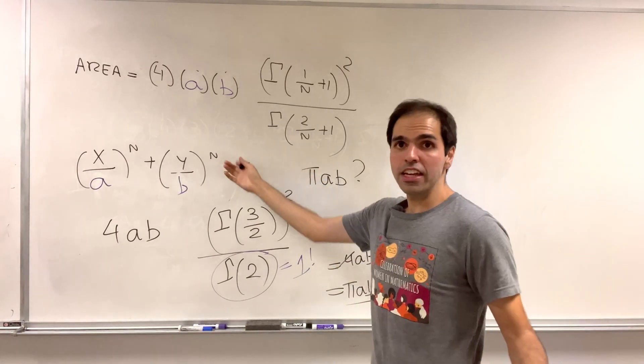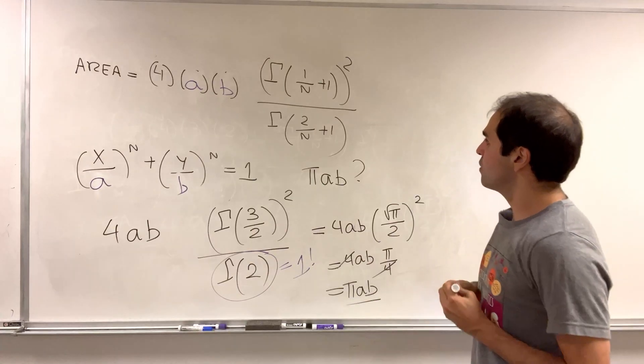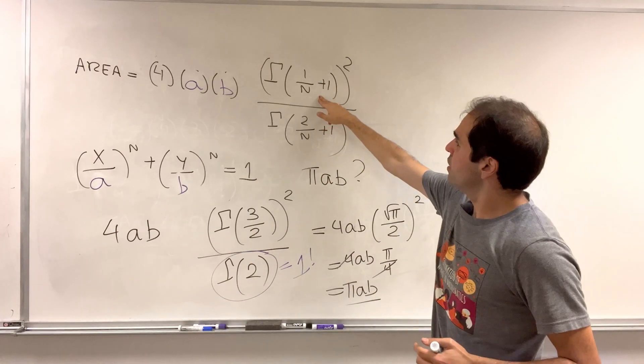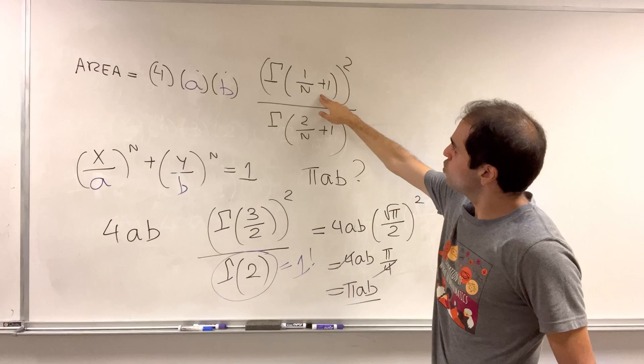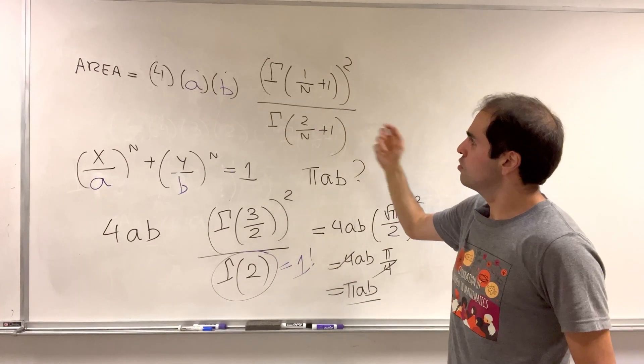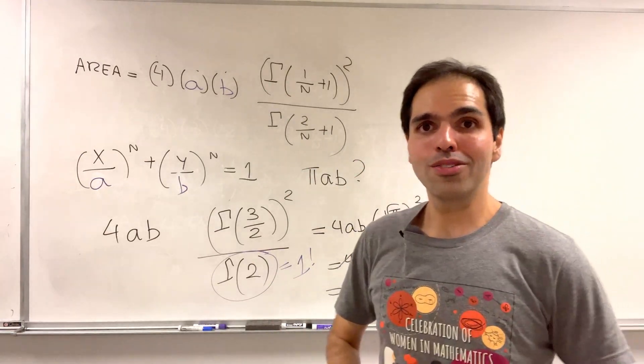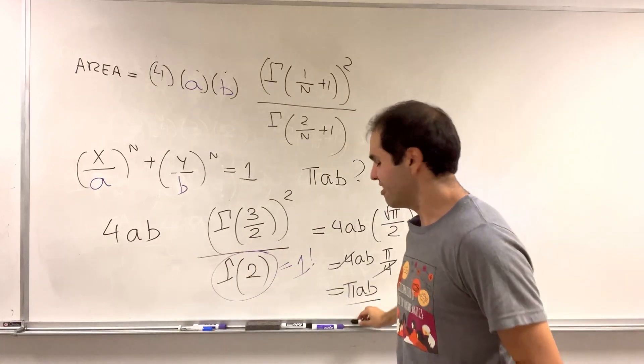And also, by the way, if n equals 1, I believe you just get a diamond. And in that case, I think the numerator becomes 1 and the denominator becomes gamma of 3, so 2 factorial. And I think you just get 2ab, which is also very nice, a nice geometric fact.